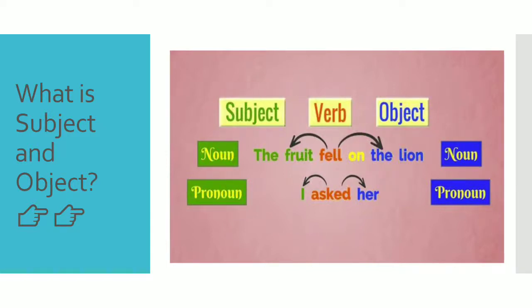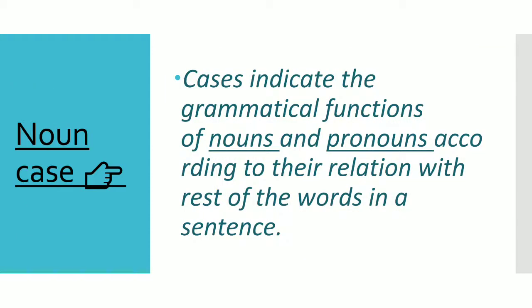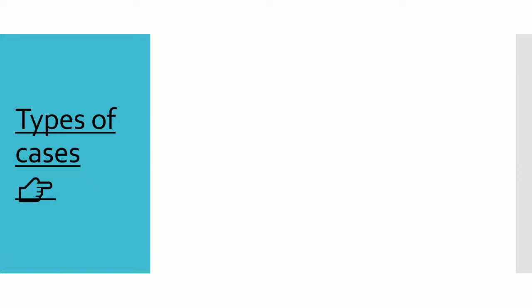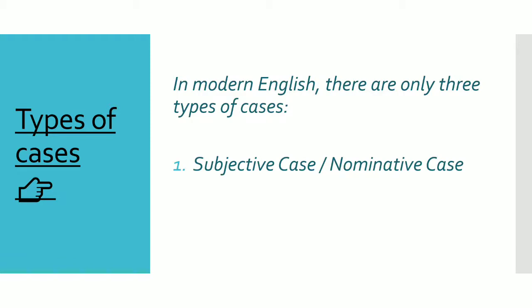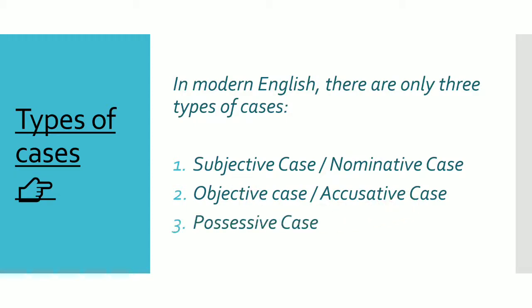Now let's recap: noun cases indicate the grammatical functions of nouns and pronouns according to their relation with the rest of the words in a sentence. The relations of nouns, pronouns, and sentences together form the cases. In modern English, there are three types of cases: number one — subjective or nominative case; number two — objective or accusative case; number three — possessive case.